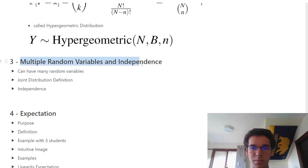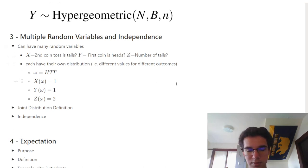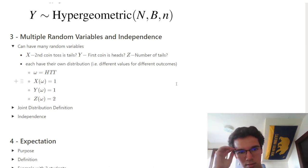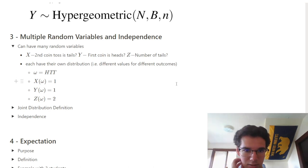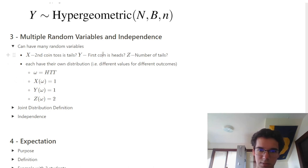Now multiple random variables and independence. You can have many random variables: define X as whether the second coin toss is tails, Y as whether the first coin toss is heads, Z as the number of tails — each has its own distribution. For the sample point heads-tails-tails with n=3: X is true, Y is true, Z is 2. Depending on the sample points these values differ, which is why they're random variables.